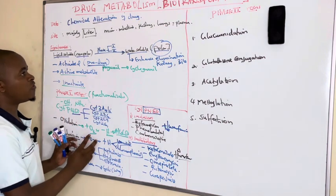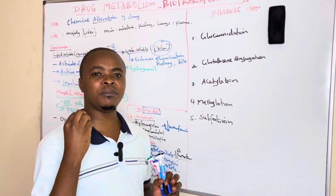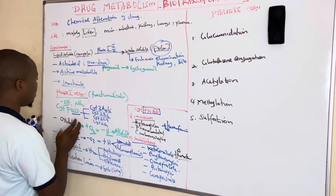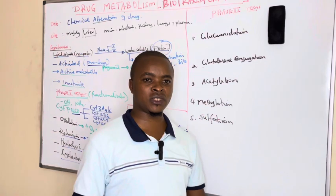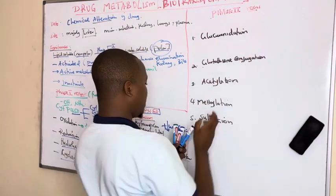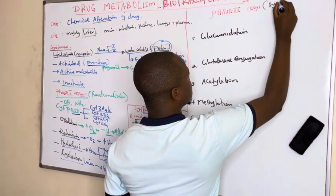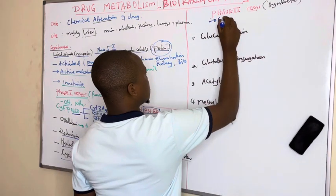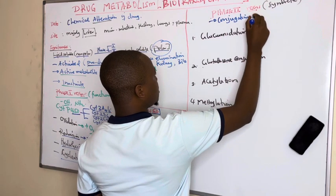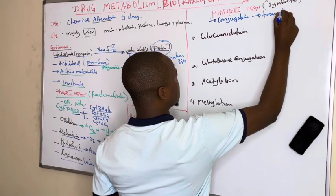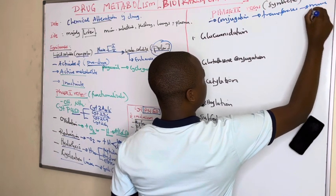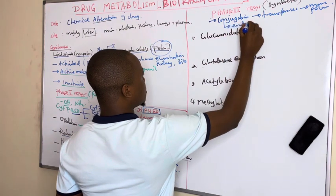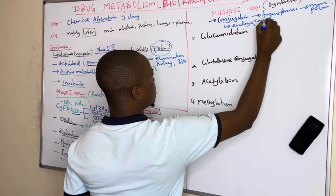Only lipid-soluble drugs undergo phase 1 reactions to become water-soluble. Water-soluble drugs skip phase 1 and go directly to phase 2 reactions, which are the conjugation reactions — also called synthetic reactions. These conjugation reactions are catalyzed by transferases to render drugs more polar for easy elimination, conjugating them with endogenous substances derived from carbohydrates and proteins.